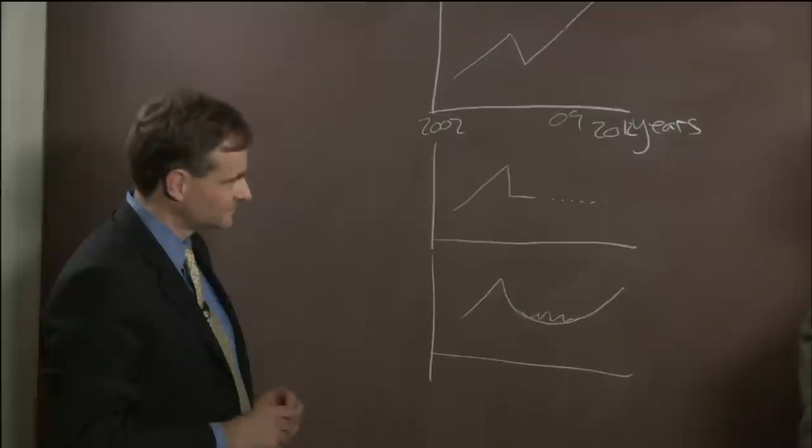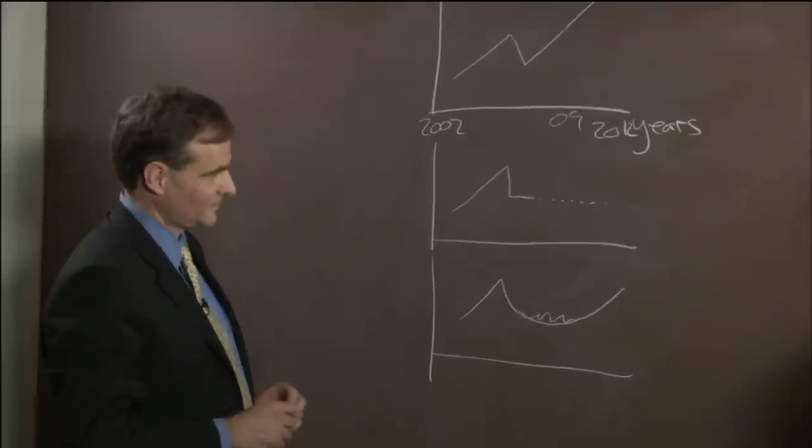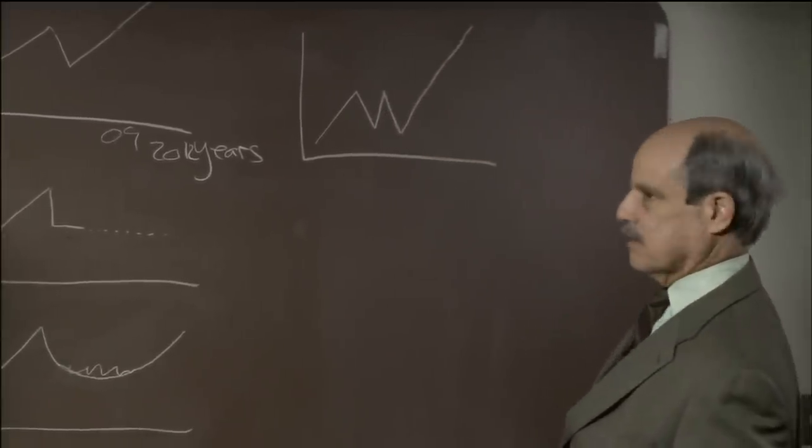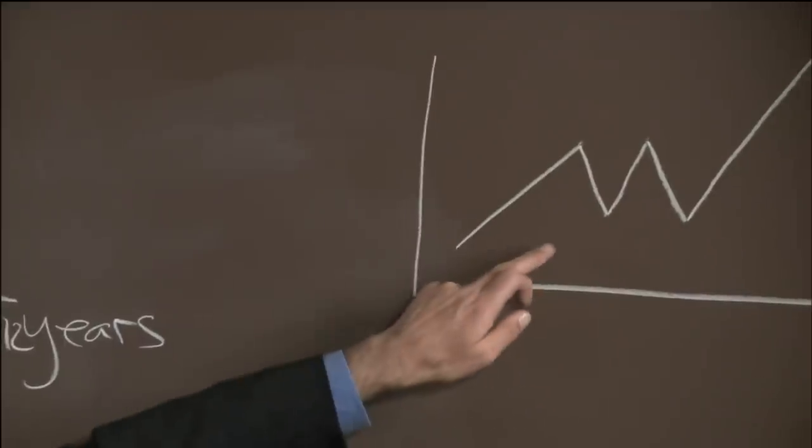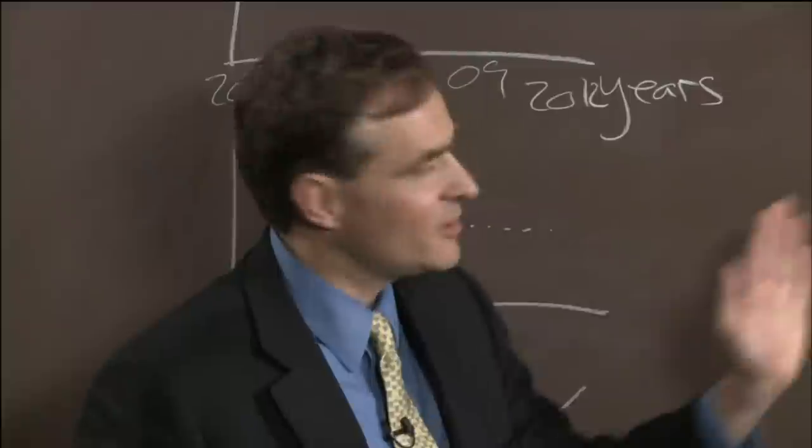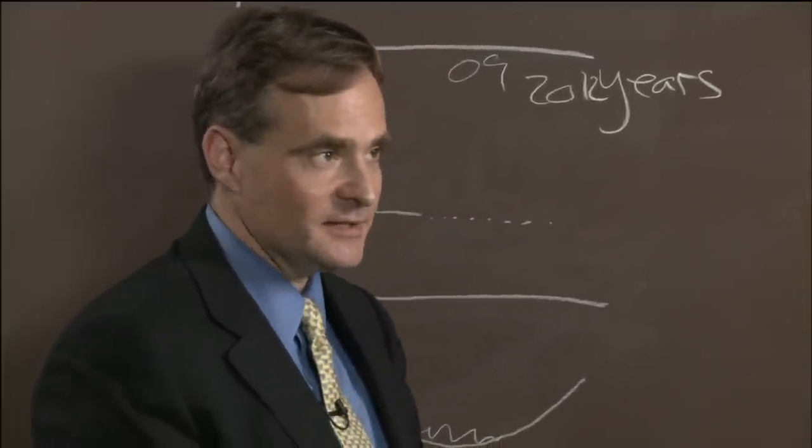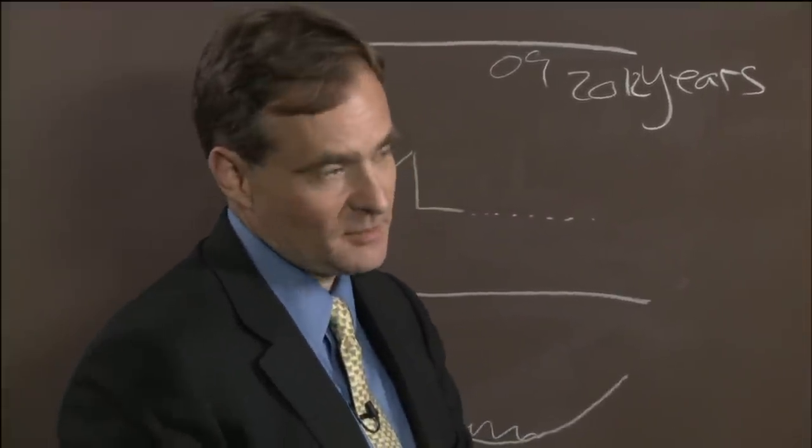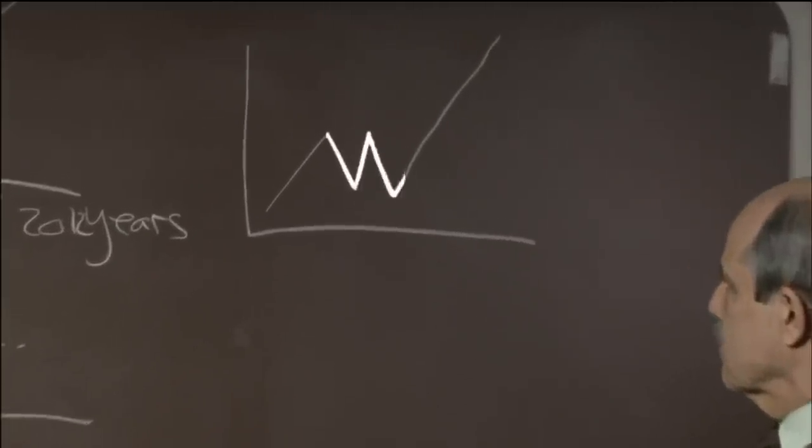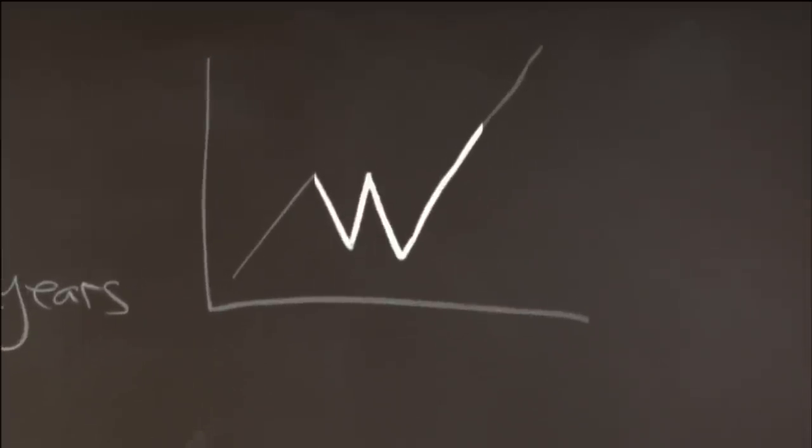PAUL SOLMAN: So, growth, down, up, down, up again in a very long time. That's a real possibility, particularly because the fiscal stimulus can give you a bounce back but may not be sustained, so then you go back down again. That's a W. By this time, you will be relieved to hear, we were running out of alphabet,